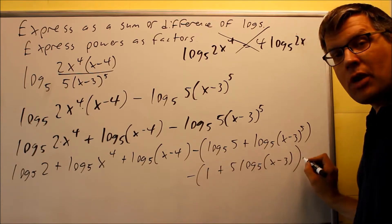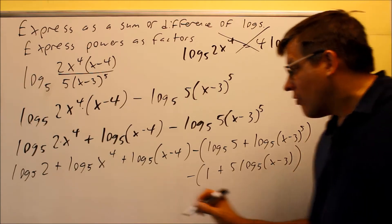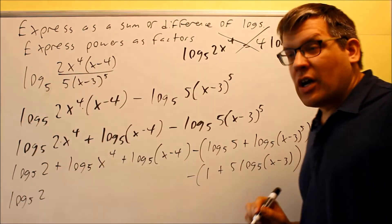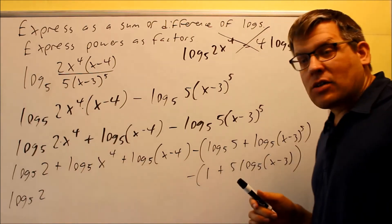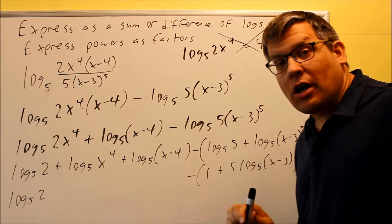If you wanted to distribute the minus sign through, you could do that, or you could also leave it with the minus sign in front. It doesn't matter. For the other ones, I have a log base 5 of 2. Now, since these numbers do not match, I can't turn that into a 1, so I can't do anything more with that. I'm just going to leave that as part of my answer.